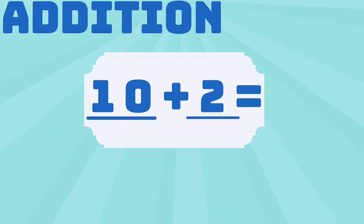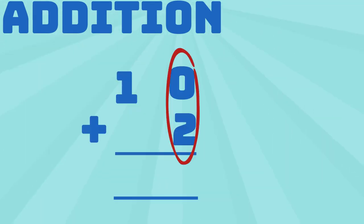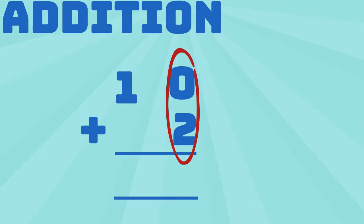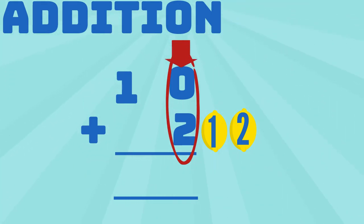Let's now calculate 10 plus 2. It can also be written as 10 on the top and the 2 under the 0. You start by calculating 0 plus 2. 0 plus 1, 2 lemons equals 1, 2. That means 0 plus 2 equals 2.